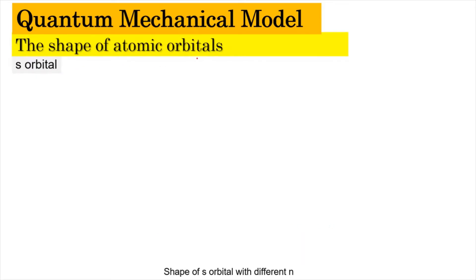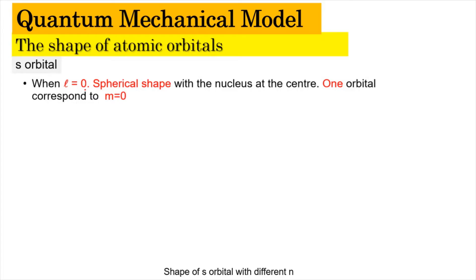The S orbital occurs when L is equal to zero. When L equals zero, M also equals zero, so we only have one possible orbital. When L equals zero, it refers to the S orbital; L equal to 1 refers to P, L equal to 2 refers to D, and L equal to 3 refers to F. The value of M depends on L, so when L is zero, M is zero, giving us only one orbital.